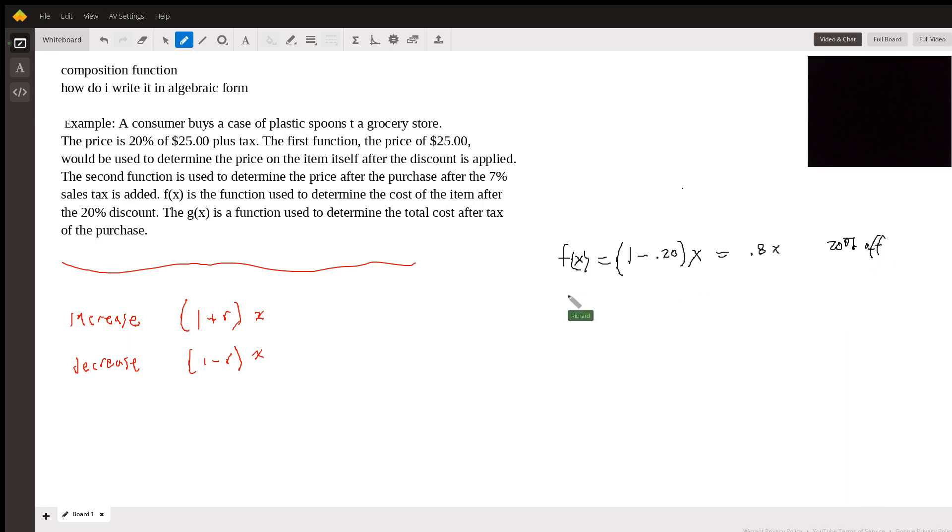And then our other function, G, represents the sales tax. And this is going to be 7% sales tax, so it would be 1 plus 0.07. And then we can simplify that to 1.07X. So there we go.